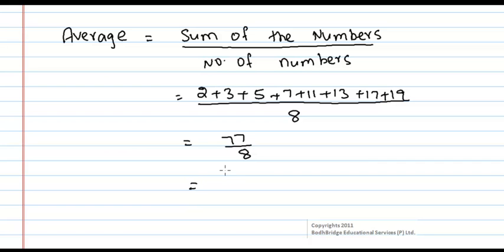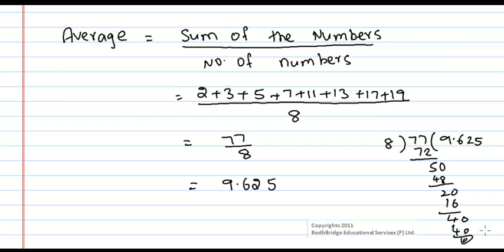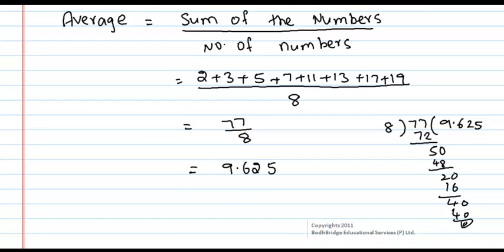When you simplify you will be getting the average as 9.625. If you want you can do the division here: 77 divided by 8 equals 9.625.